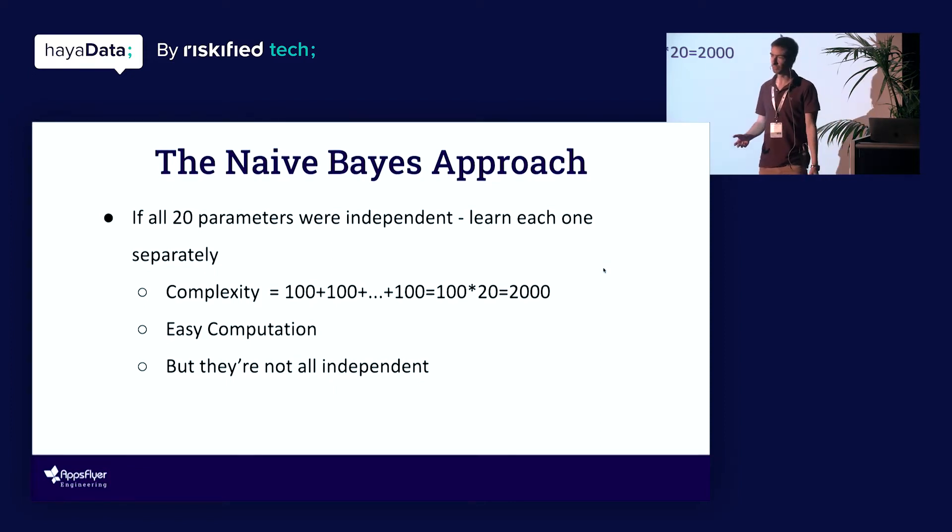The only problem with this approach is that it's essentially wrong. We've assumed that all variables are independent, but they're not. If you consider, for instance, an install coming from Russia, then the language of this install is very likely Russian. It's much less likely to be Chinese. So clearly there's a very strong dependence between these parameters. We cannot assume that they're all independent. Then if we were to assume that, we wouldn't just get the right probability. So it's just the wrong assumption to make. We don't want to make this assumption.